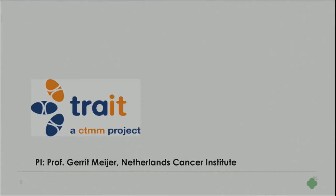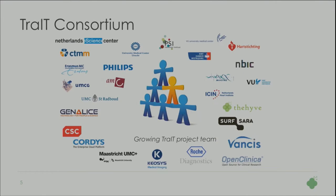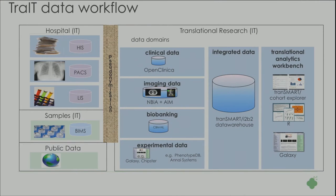The first one is TRADE. Since you heard all about TRADE from Mariska, I think I can probably skip most of these slides. This is the overview that we use — the different levels of data we have in TRADE are clinical data, imaging data, biobanking and experimental. And that's where we use Transmart to integrate this. A lot of the work in TRADE has been on Transmart itself, as Mariska showed — for example, the copy and variation workflows.